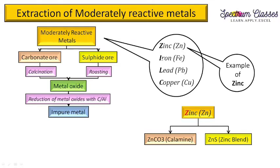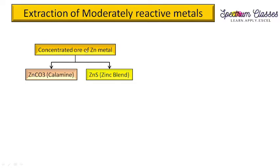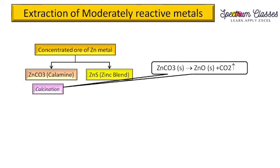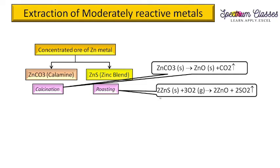Now let's see the concentrated ore of zinc — calamine and zinc blende. For calcination, zinc carbonate in solid form on heating gives zinc oxide plus carbon dioxide (gas released). For roasting, zinc sulfide on heating in the presence of oxygen gives zinc oxide plus sulfur dioxide (gas released). So in both cases we obtain zinc oxide.